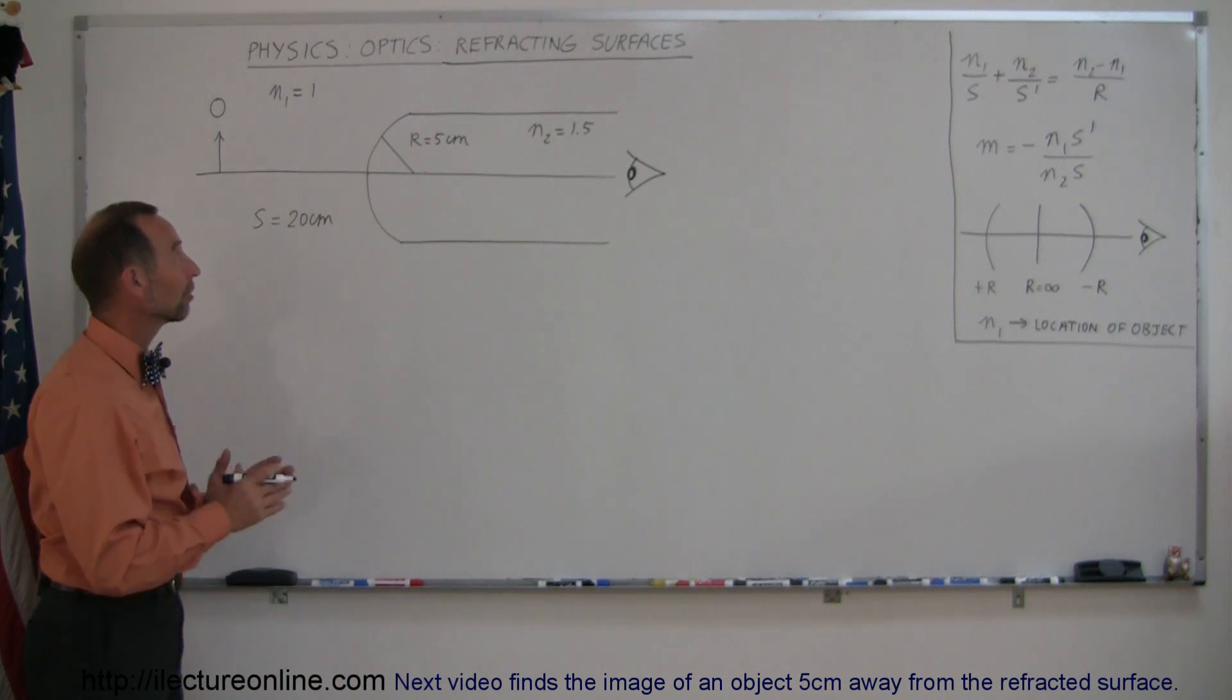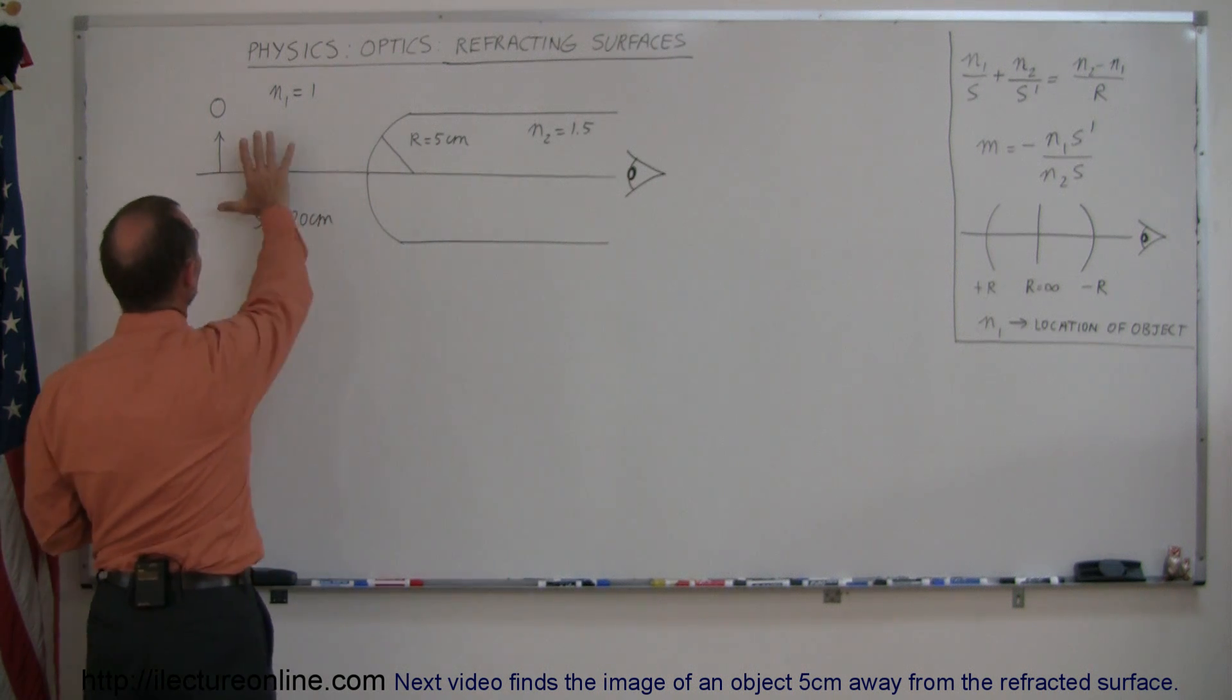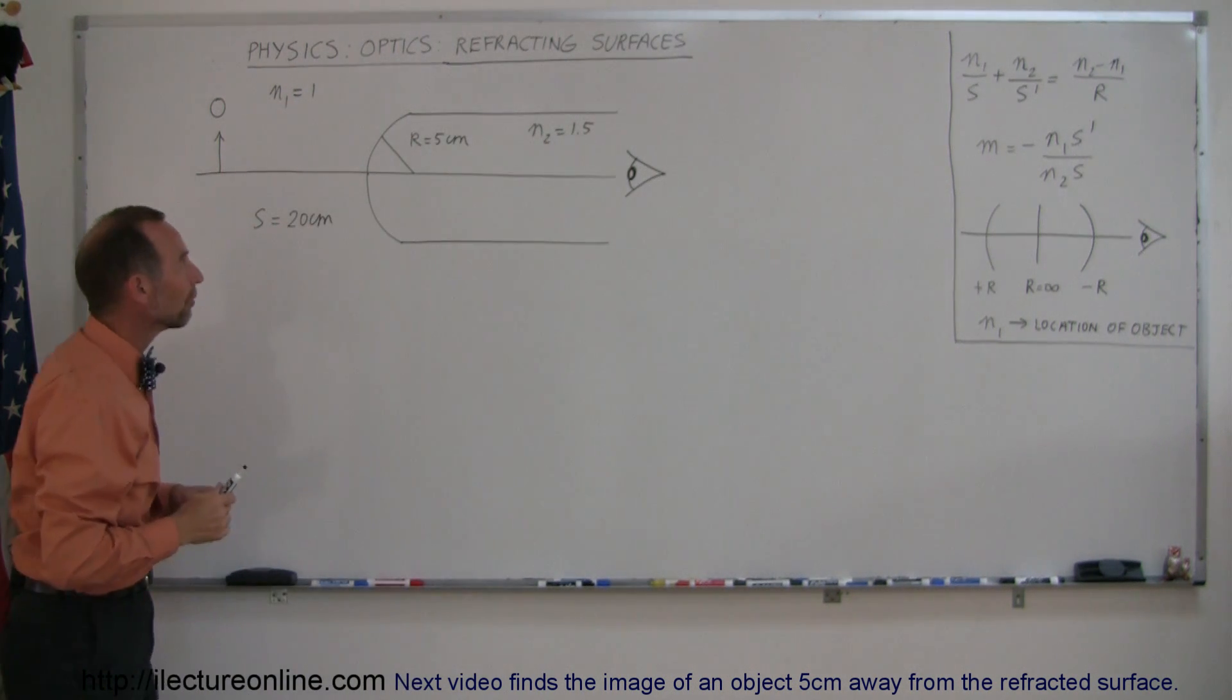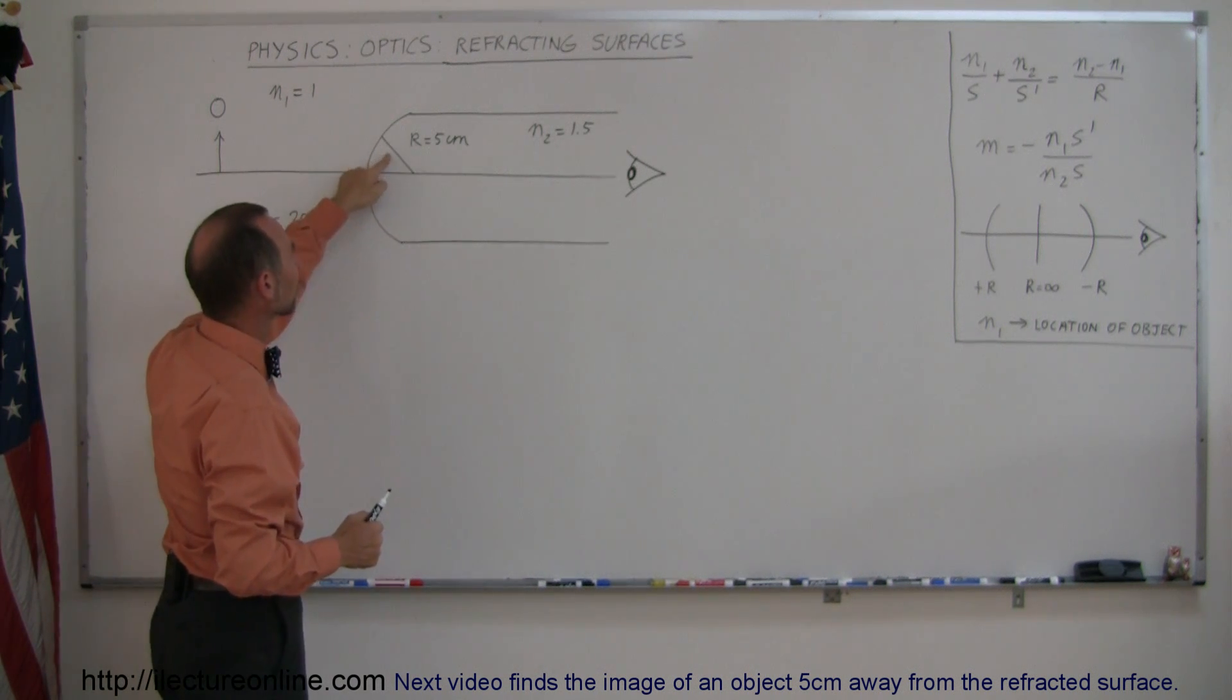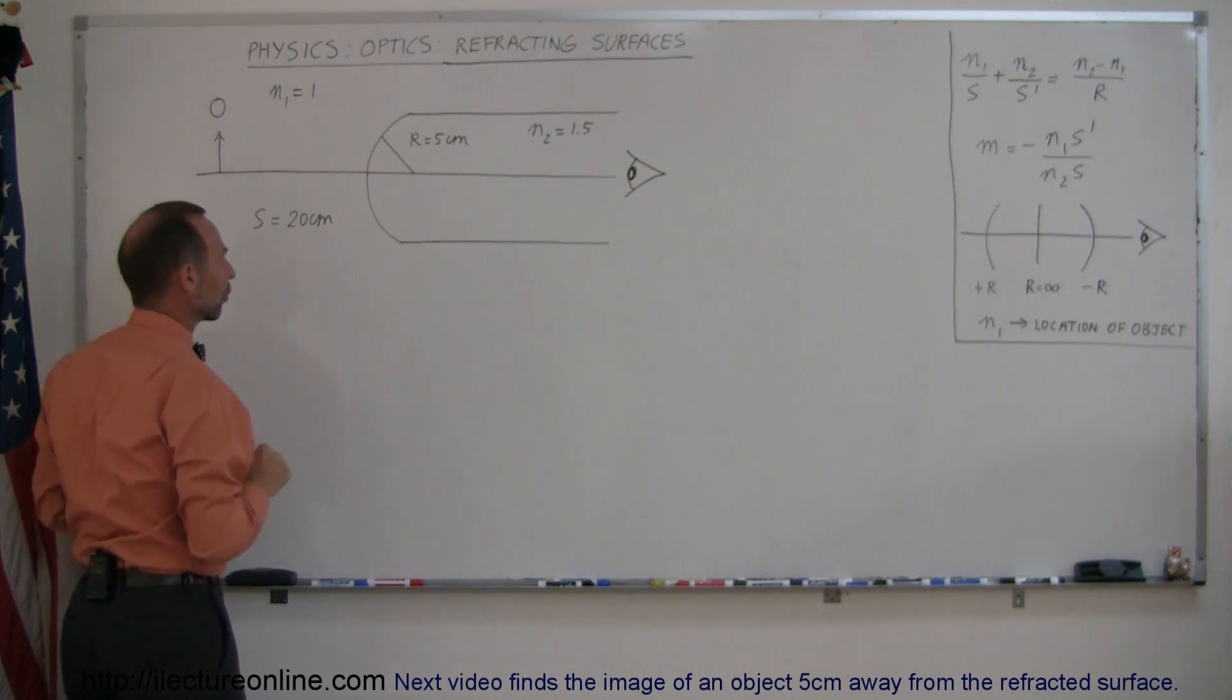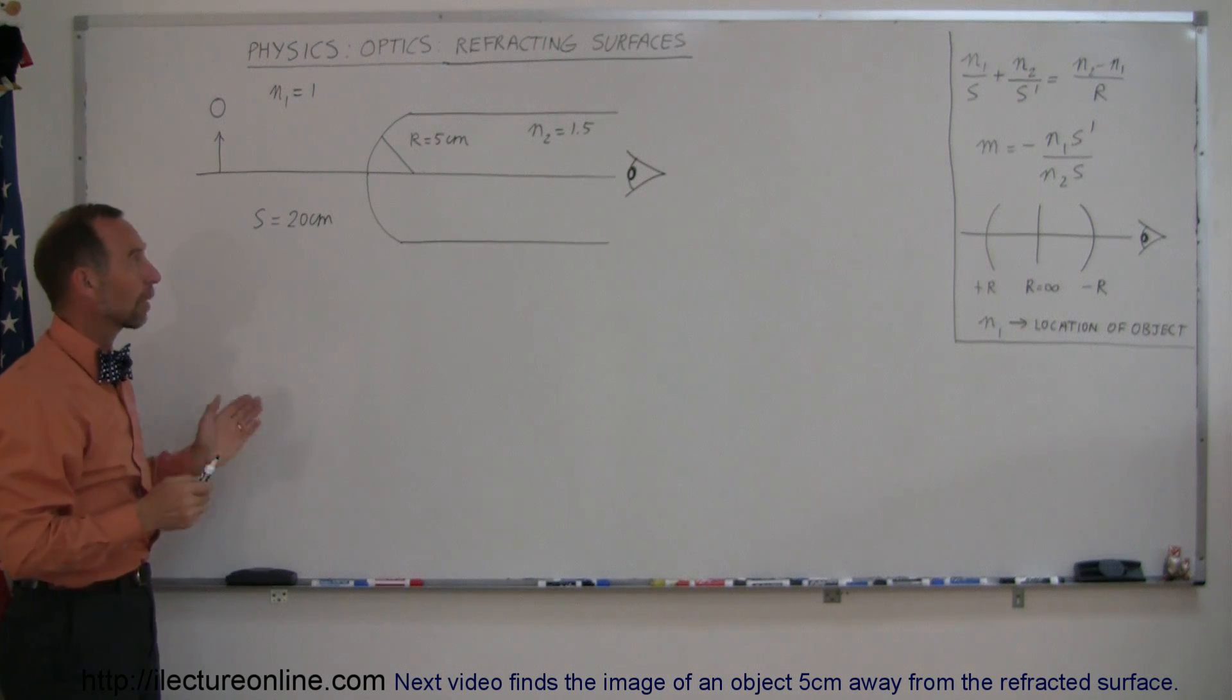Welcome to our lecture online and here is another example of how we find images across refracting surfaces. So here we have air, here we have glass, index of refraction of air is 1, index of refraction of glass is 1.5. The surface of the glass has a curvature and the radius of the curvature is 5 centimeters and the object is placed 20 centimeters in front of the surface. The question now is, with an observer on this side of the boundary, where does the image appear across this boundary?